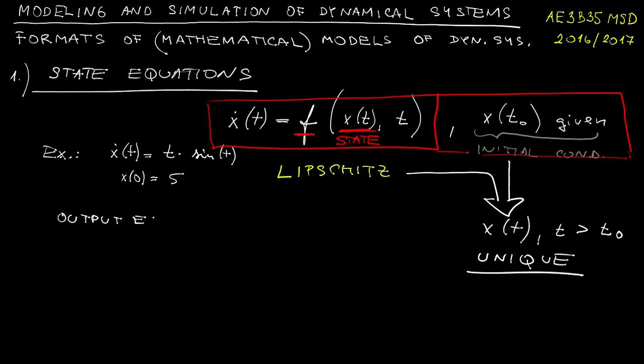Now very often this state equation is accompanied by something called the output equation, which looks like this: the new variable y is again some generally nonlinear function of the state and possibly also an explicit function of time.